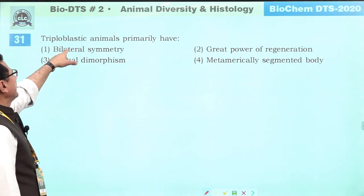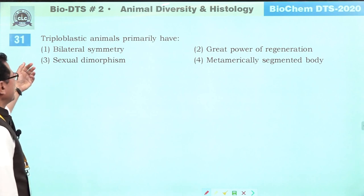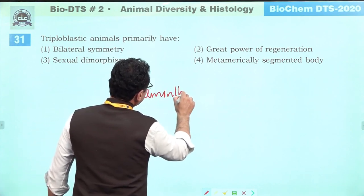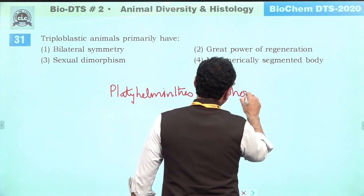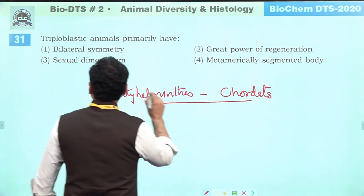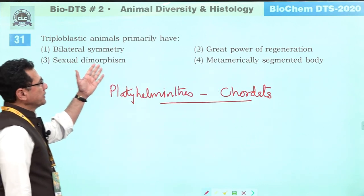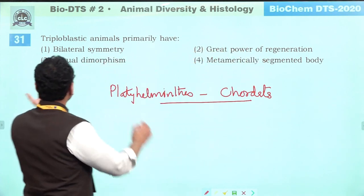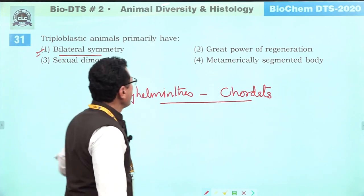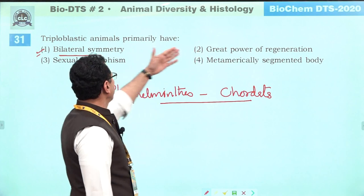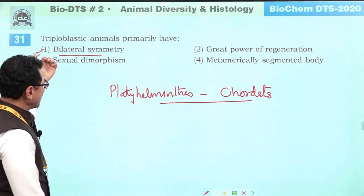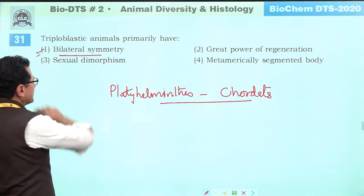Triploblastic animals start from Platyhelminthes and go up to chordates. These animals have sexual dimorphism in some, power of regeneration in some, metamerism in some — but the feature common to all triploblastic animals is bilateral symmetry. So bilateral symmetry is the correct answer.